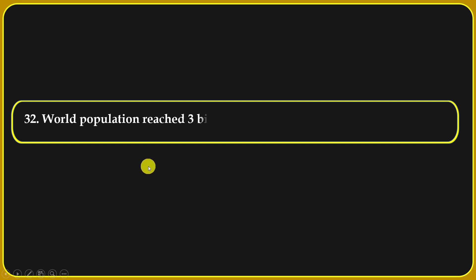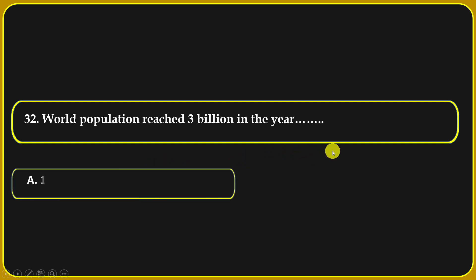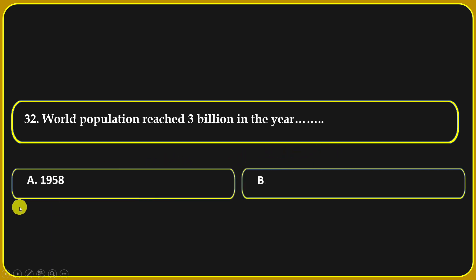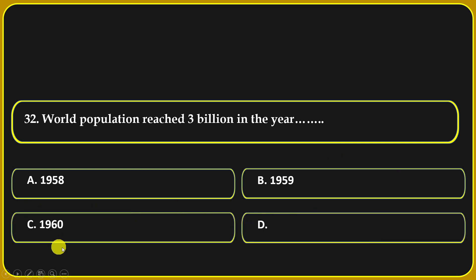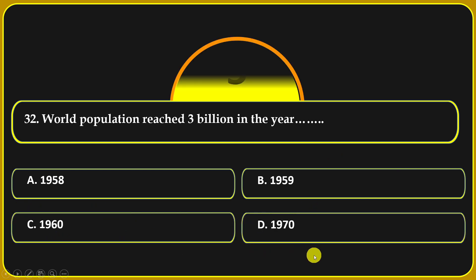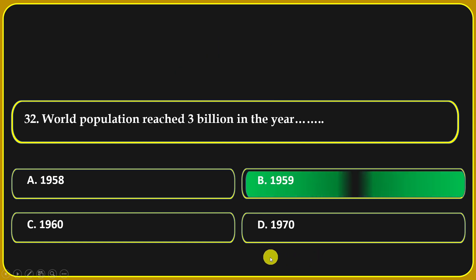World population reached 3 billion in the year: 1958, 1959, 1960, or 1970. 1959 is the correct answer.